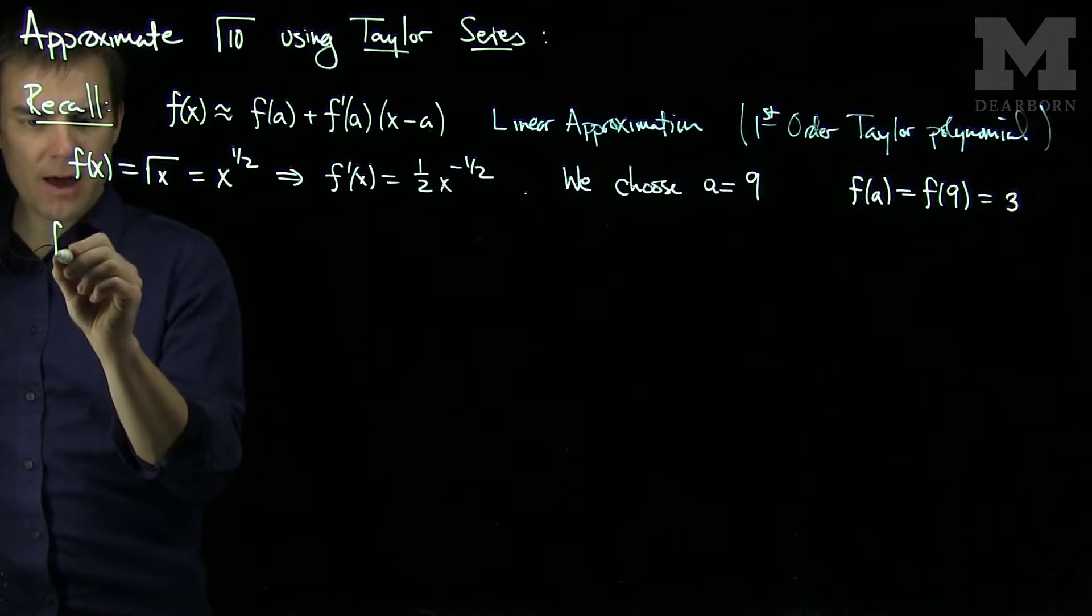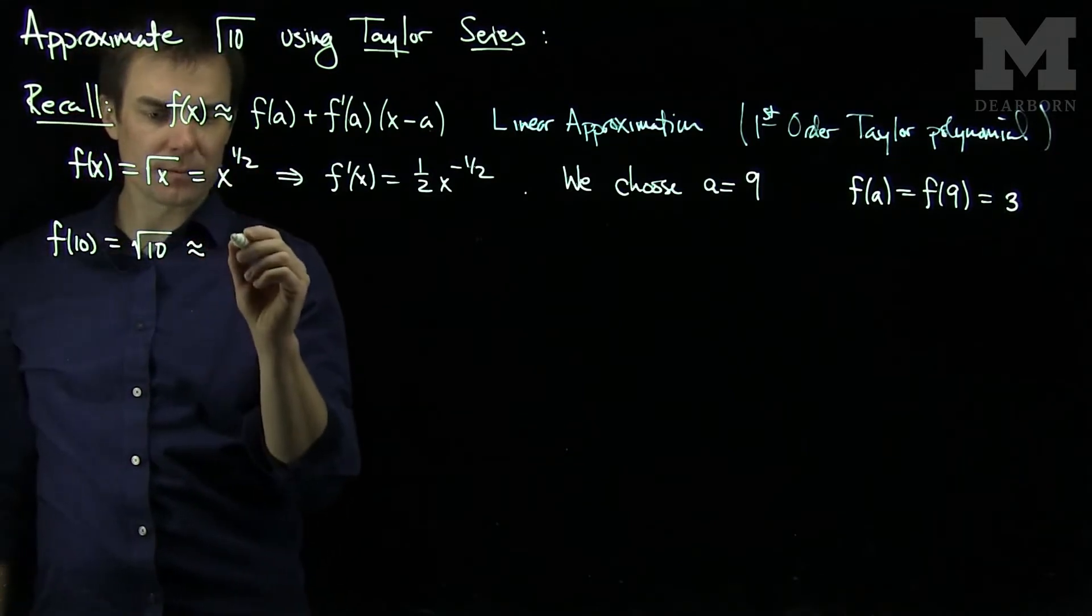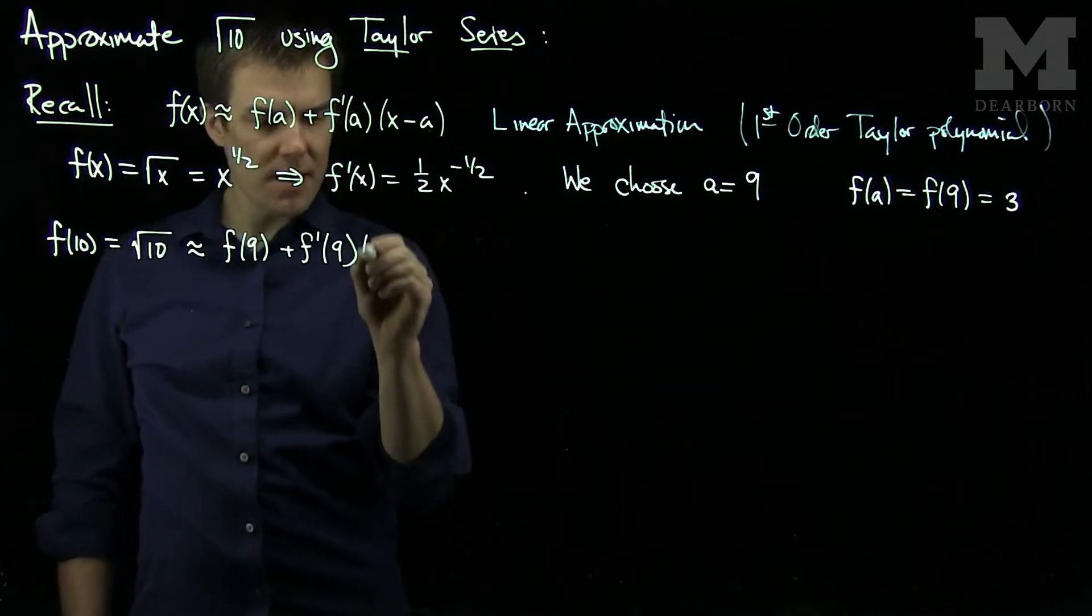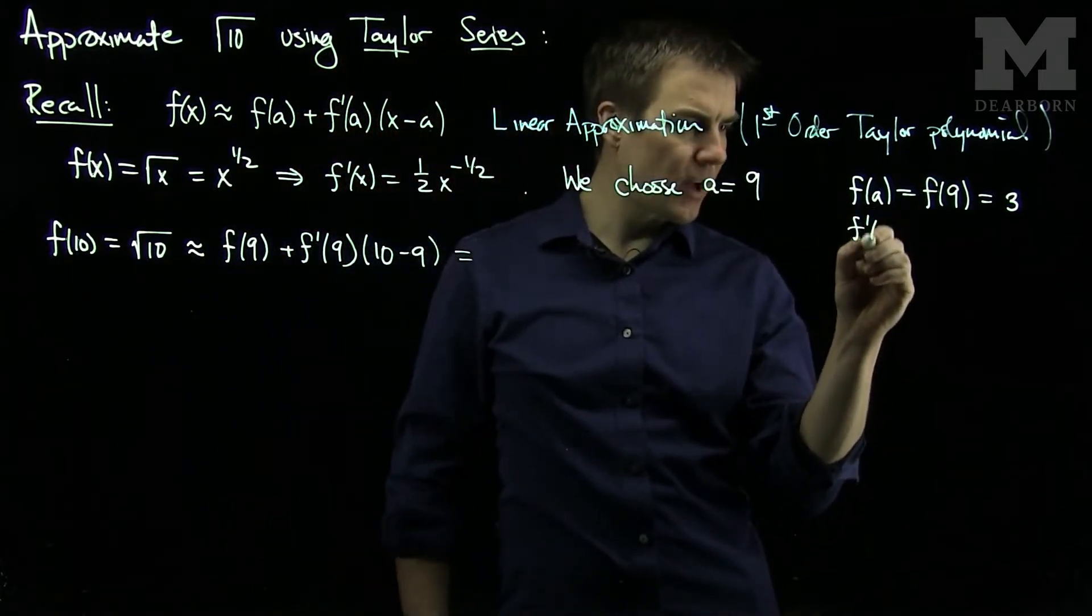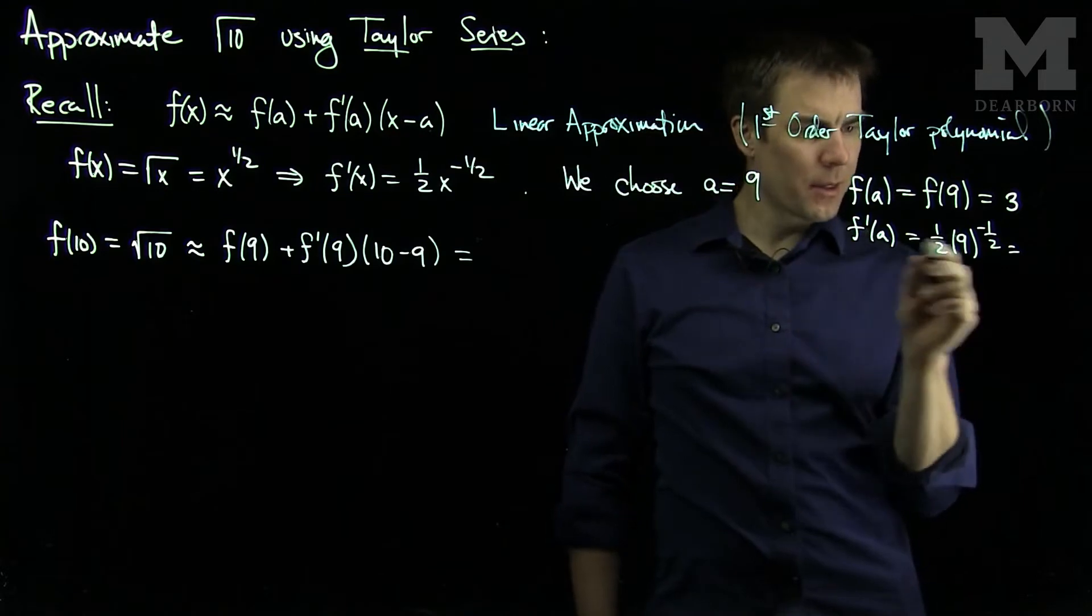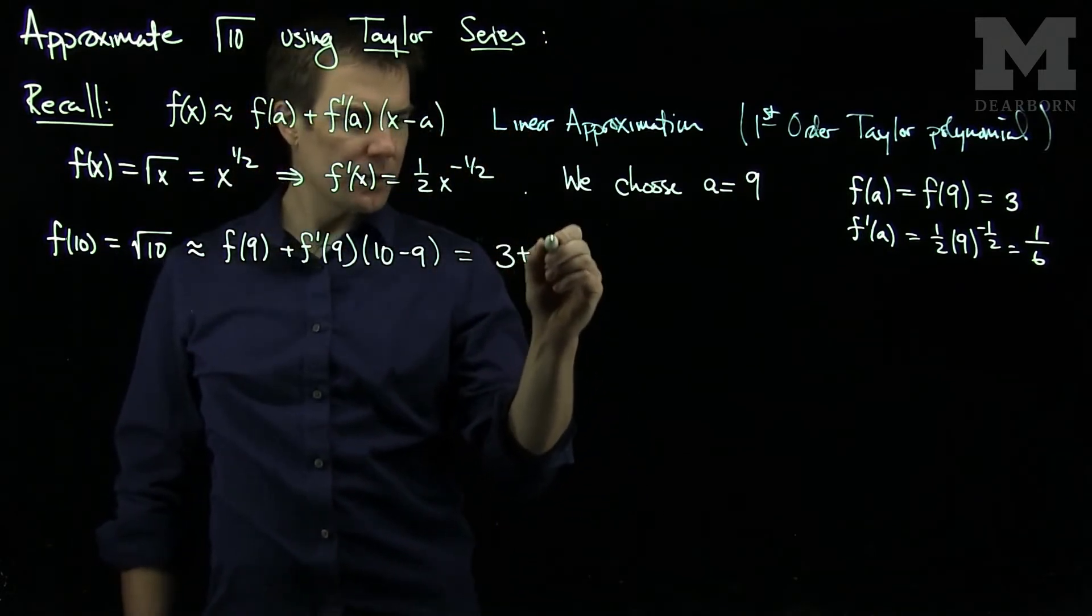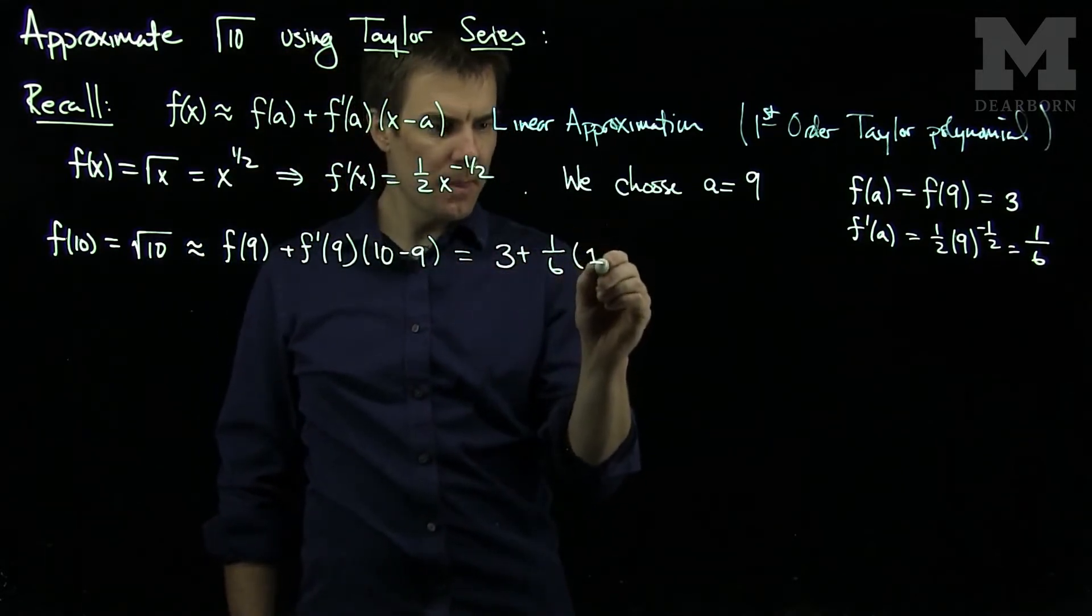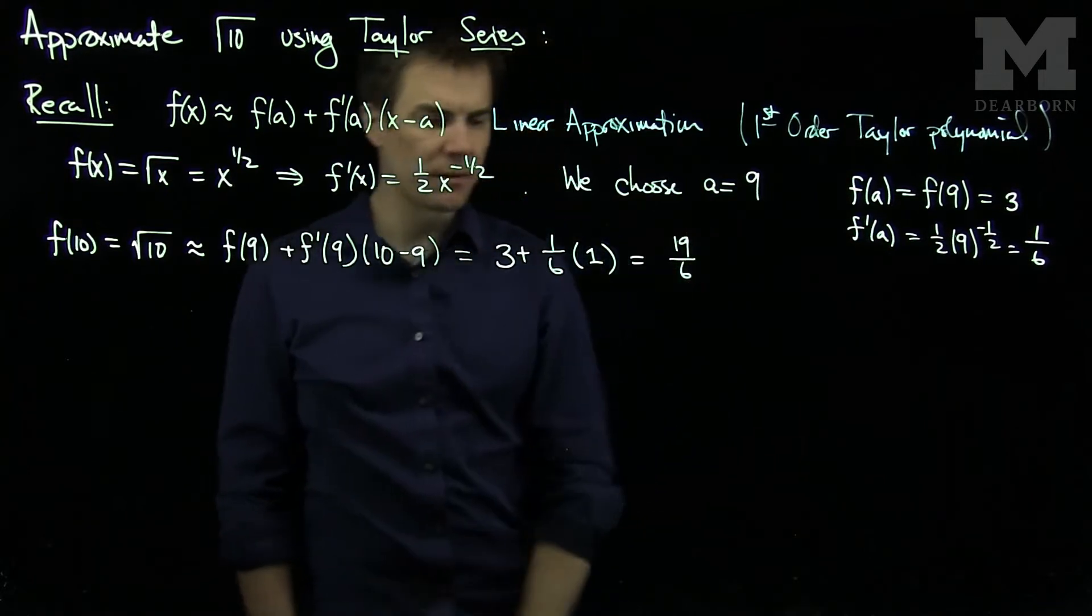And so that tells us that f(10), which is the square root of 10, is approximately the first order approximation, f(9) plus f'(9) times my x, which is 10, and my a, which is 9. So now we can fill these things. So what would f'(a) be? So f'(a) will be 1/2 times 9 to the negative 1/2 power. And so that will be 1/3. So this is going to be 1/6. So then I'll have 3 plus 1/6, and then we'll have times 1. So it looks like root 10 will be about 3 plus 1/6, which is going to be 19/6 if we simplify. So that's the first order linear approximation.